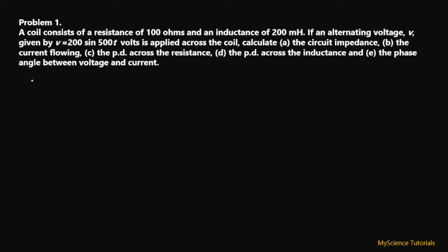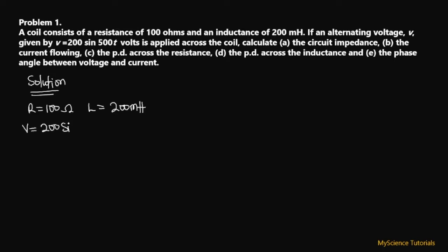And lastly (e) the phase angle between the voltage and the current. So let's go ahead and look at the solution. We've been told our resistance R = 100 ohms and inductance L = 200 millihenry. The voltage is given in waveform as V = 200 sin(500t).